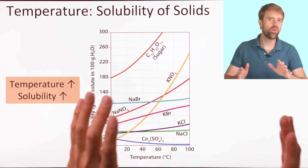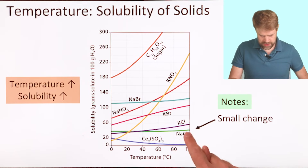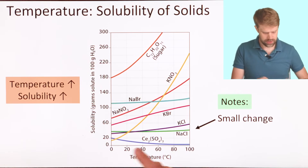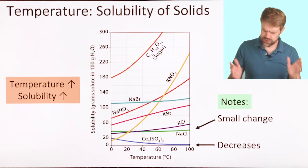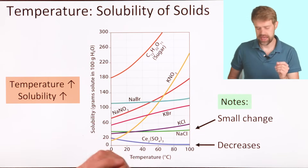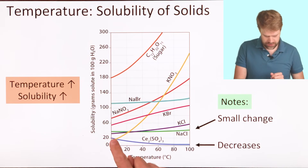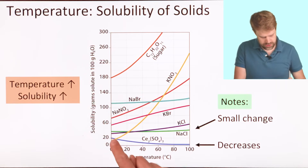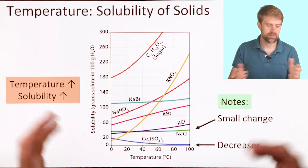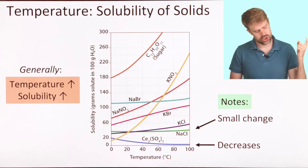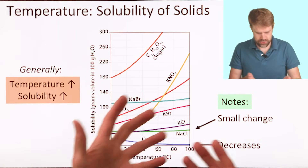But this isn't always true. Look at sodium chloride — it's this green line. Its solubility doesn't change much as temperature increases; it just goes up a tiny, tiny bit. And a few compounds are real exceptions — they actually get less soluble with temperature. For example, cerium sulfate is a compound that becomes less soluble as temperature rises. You can see it right here: temperature goes up, solubility goes down. So there are some exceptions. To account for these exceptions, we'll say that generally, the solubility of solids in water increases as the temperature of the solution increases.